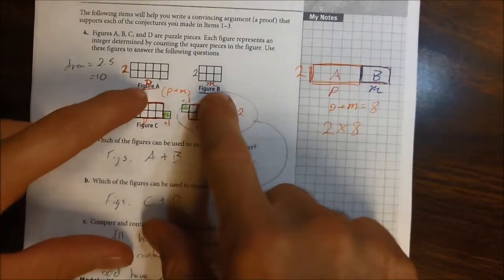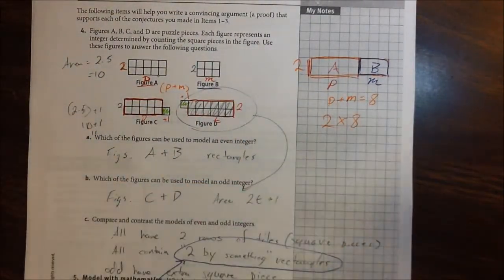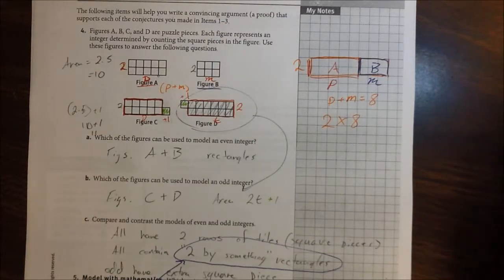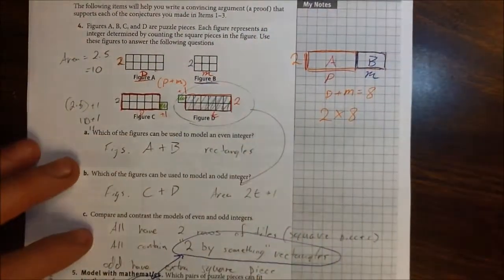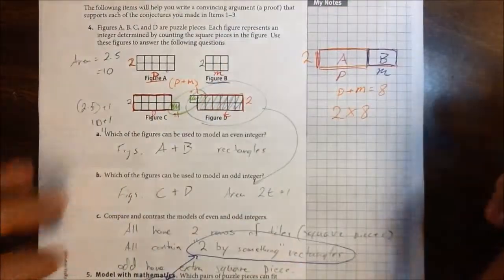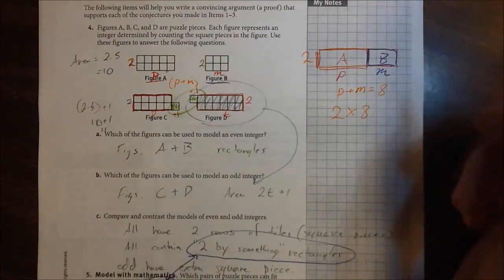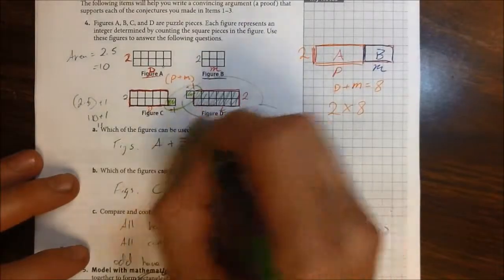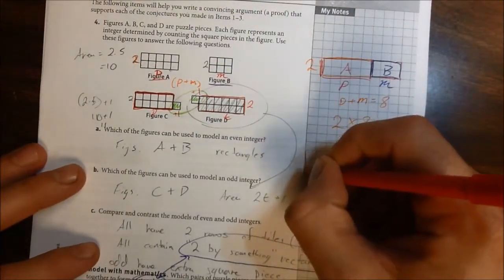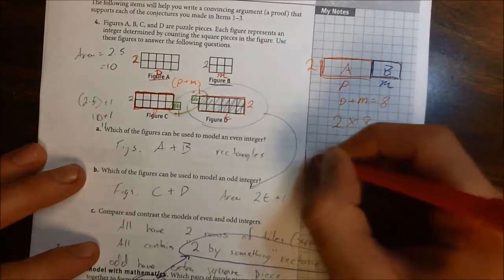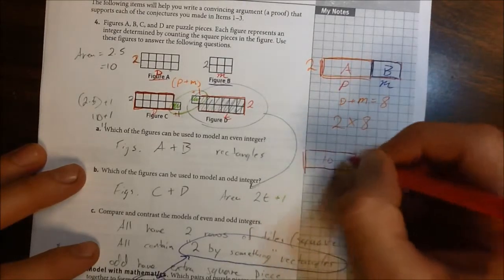So we see that those two figures, when put together, just form a bigger rectangle — a bigger even integer. Now let's look at these odd integers, because when we put these together, these two will meet up and form one full column. So I'm going to draw these over here. I've got a two-by-five here, so the area is ten. Let's say this is figure C.